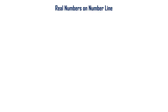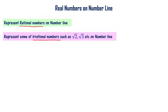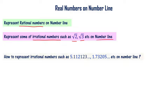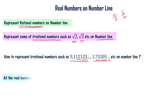Let us now learn about how to represent real numbers on the number line. Earlier we learned how to represent rational numbers on the number line, and we also learned how to represent some irrational numbers such as √2, √3, etc. on the number line. Now the question is: how to represent irrational numbers such as 5.1212... and so on on the number line?